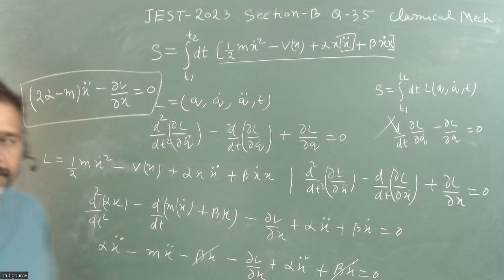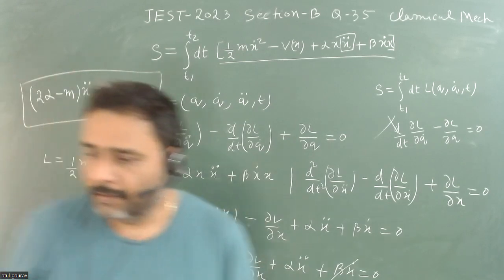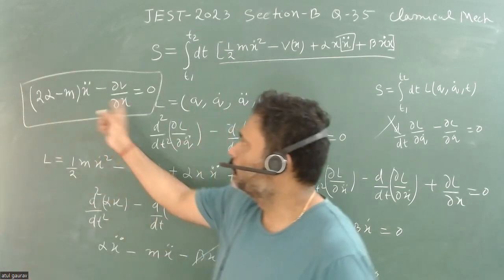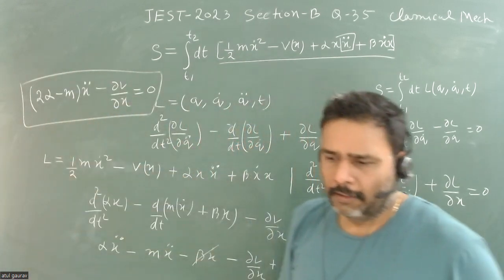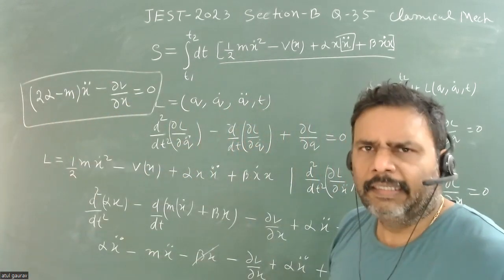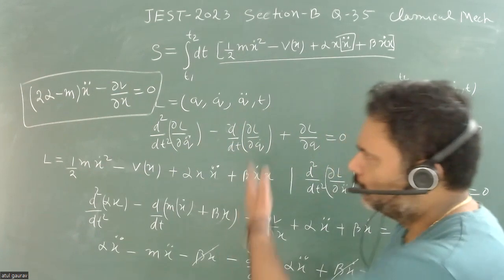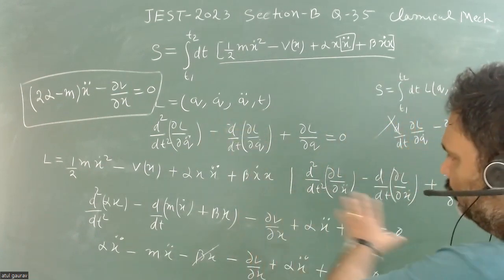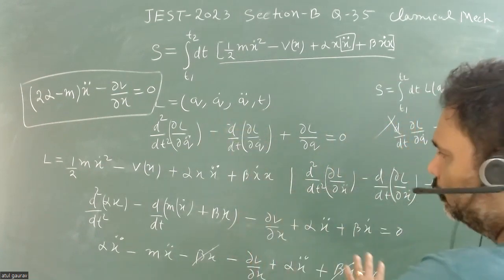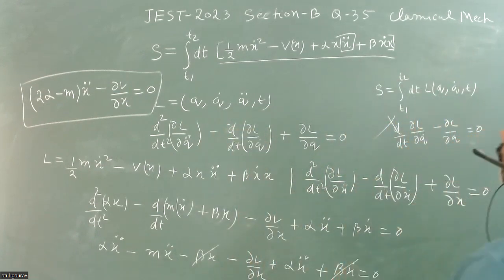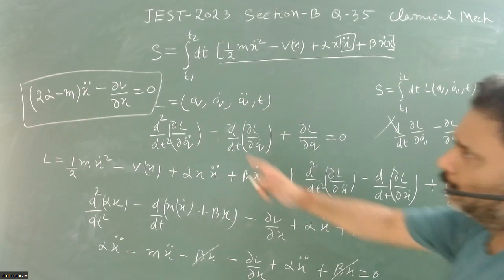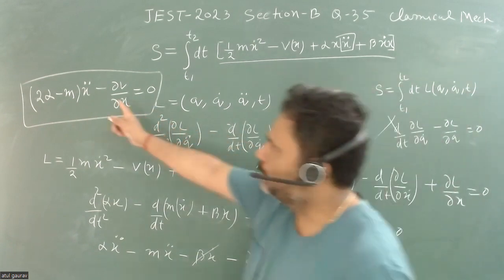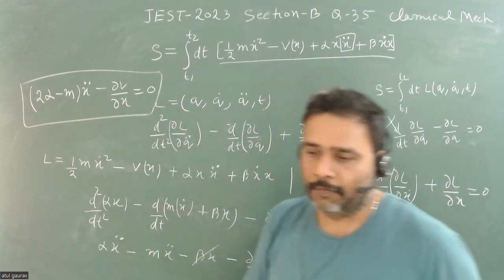So this is our equation of motion. Matching with the options, option D is the correct one. If I have not made any calculation error, then this is indeed the equation of motion.